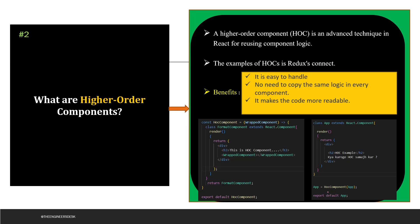The second question is: what are higher order components in ReactJS? A higher order component is an advanced technique in React for reusing component logic. One example of HOC is Redux — we'll make a detailed video on Redux. The benefits of HOC are that it is easier to handle and there is no need to copy the same logic in every component, since we are talking about component reusability. You can write code and reuse it for multiple components.